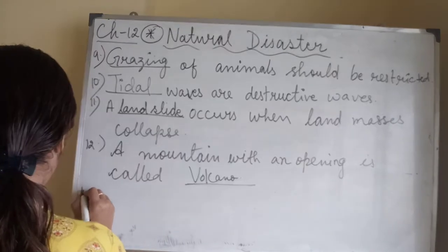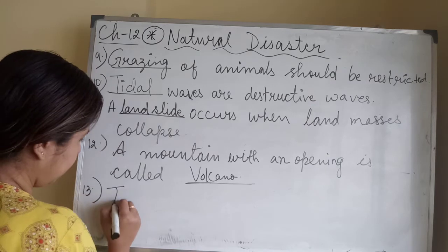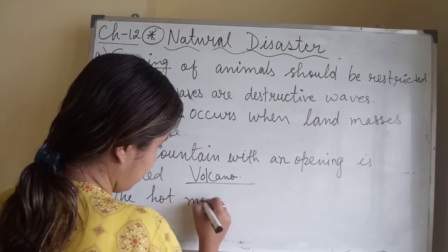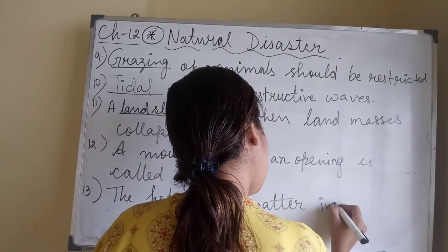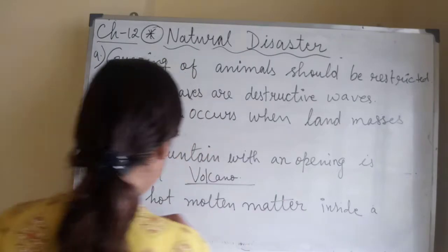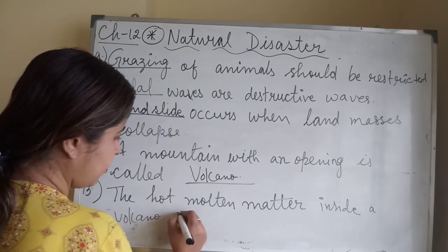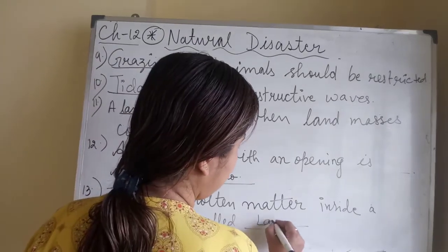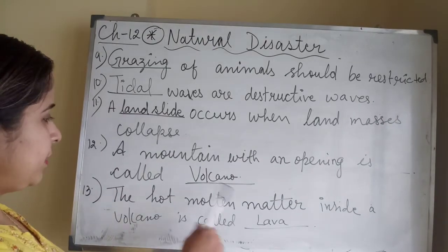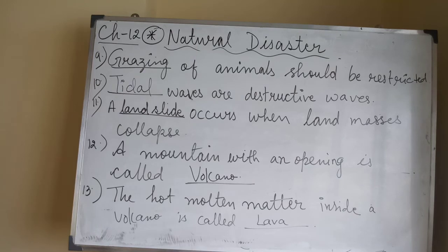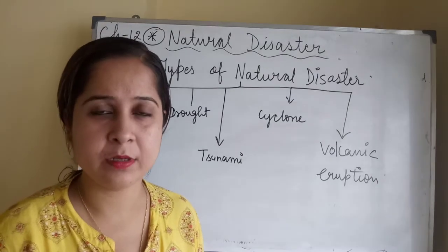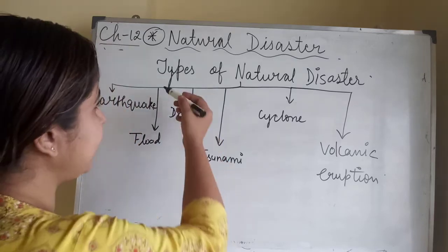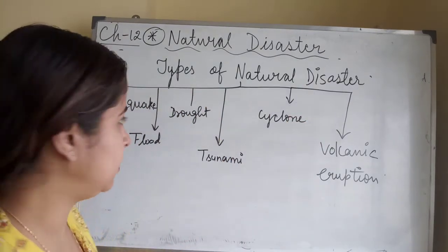The hot molten material inside the volcano is called lava. Please write this in your notebook. Now, just before ending the revision of this chapter, I would like to briefly revisit the types of natural disasters by explaining their meanings.